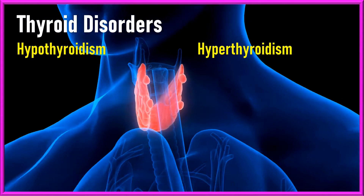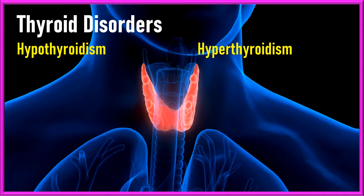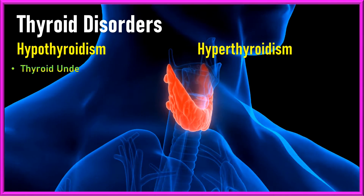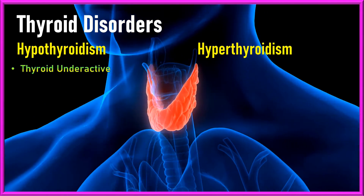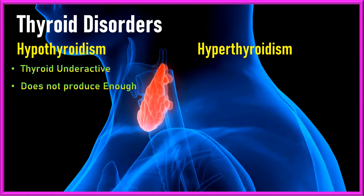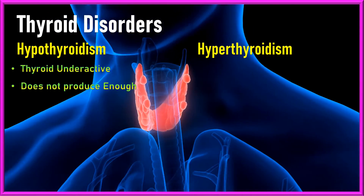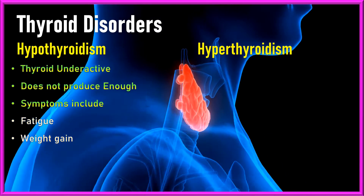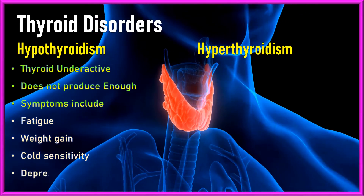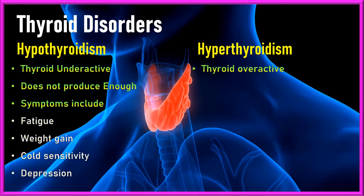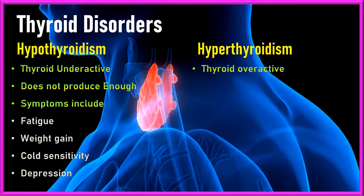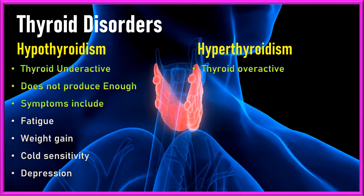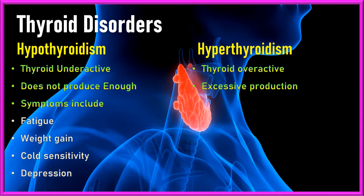When the thyroid gland malfunctions, it can lead to two main conditions: hypothyroidism and hyperthyroidism. Hypothyroidism occurs when the thyroid gland is underactive and does not produce enough thyroid hormones, causing symptoms such as fatigue, weight gain, cold sensitivity, and depression. Hyperthyroidism, on the other hand, results from an overactive thyroid gland leading to excessive production of thyroid hormone.